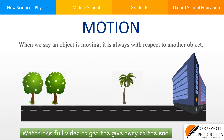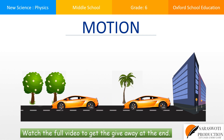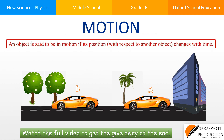When an object moves, its position with respect to another object changes with time. Let's take an example of a car moving away from a building. When the car is at position A, the distance between the car and the building is very small. As the car moves away from the building to position B, its distance from the building increases. An object is said to be in motion if its position with respect to another object changes with time.